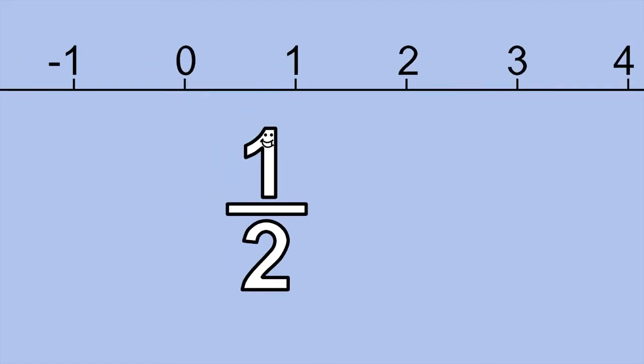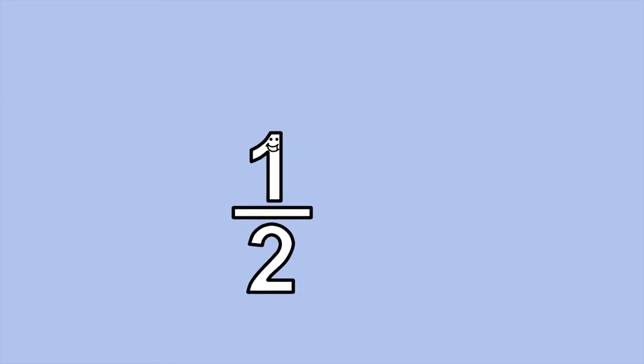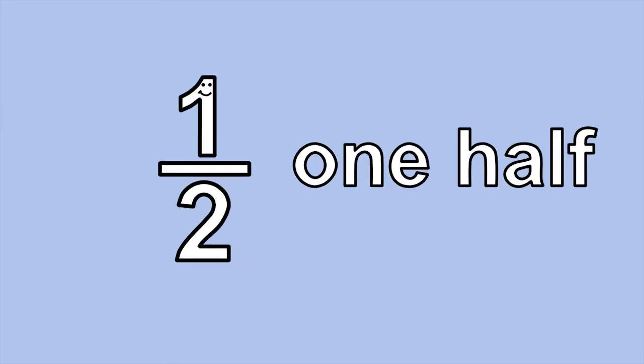You can find me on the number line between zero and one. If you divide the line segment between zero and one into two equal size parts, I'm at the end of the first part. That's why they call me one-half.